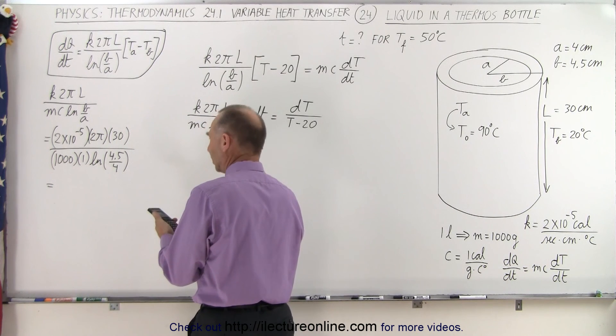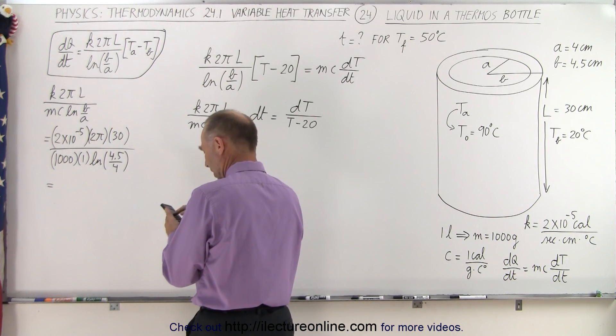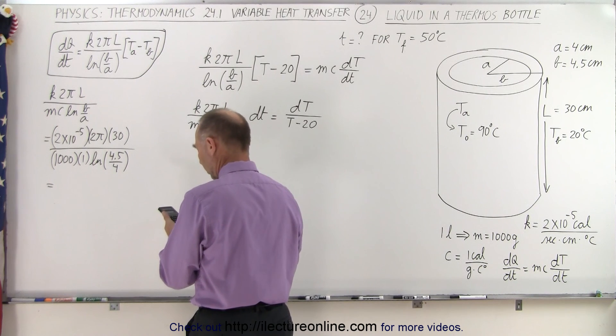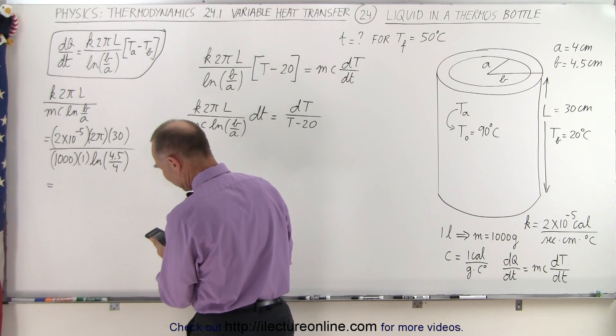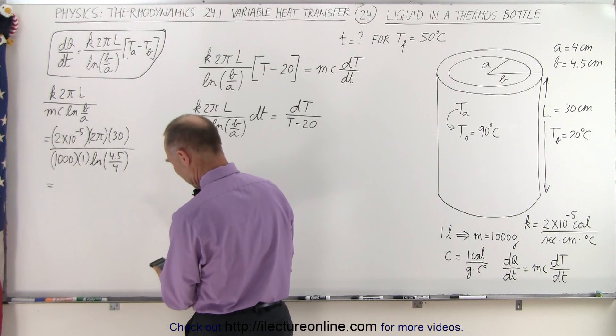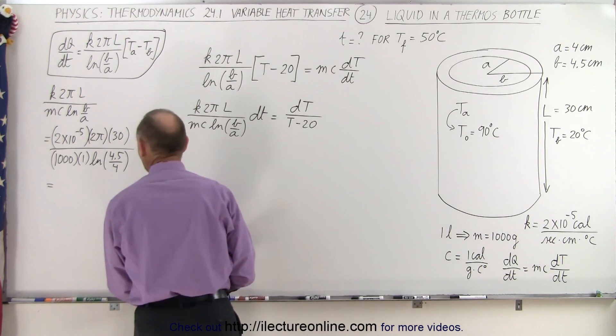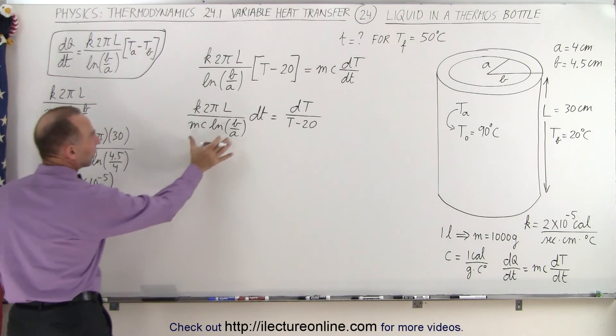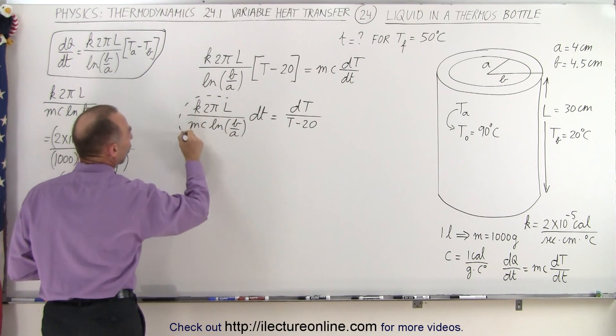So we have 2 times 10 to the minus 5 times 2 times π times 30 divided by 1000 and divide by 4.5 divided by 4. Take the natural log of that, and that gives us 3.2 times 10 to the minus 5. That's the constant that is represented by this whole thing right here.